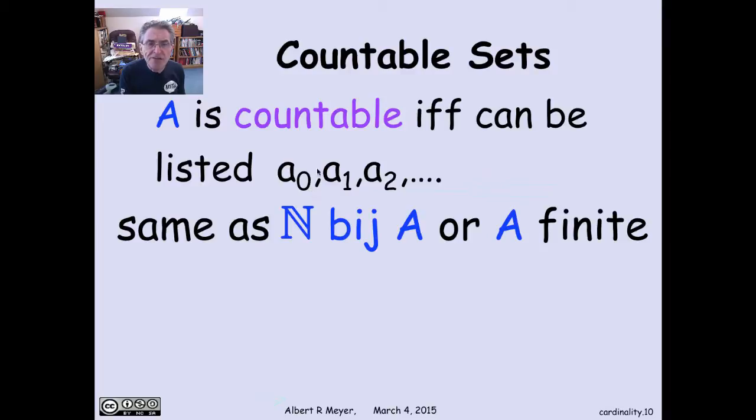The technical definition of A as countable is if there's a bijection between A and the non-negative integers. This listing is really a mapping from the non-negative integers to A: 0 maps to A0, 1 maps to A1, 2 maps to A2, and implicitly there's a bijection being indicated here.